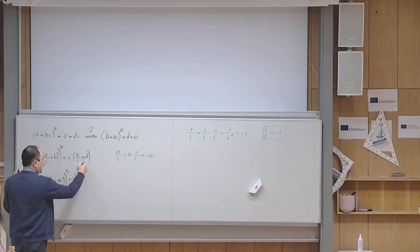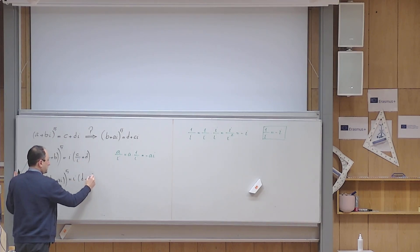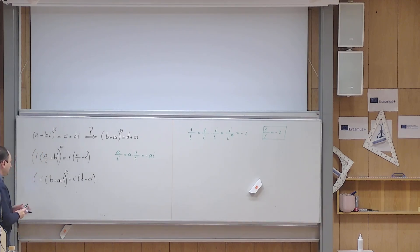I will do the same thing here. So I have this i there, I write d first, and c over i, for that same reason, it becomes minus ci. But because this is a product to the fifth power, I can write the first one to the fifth power multiplied by the second one to the fifth power.